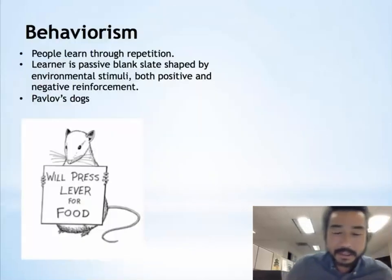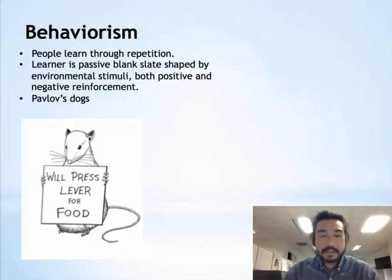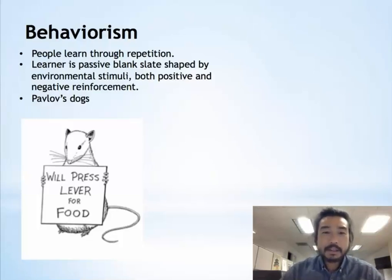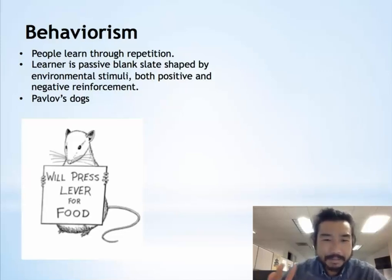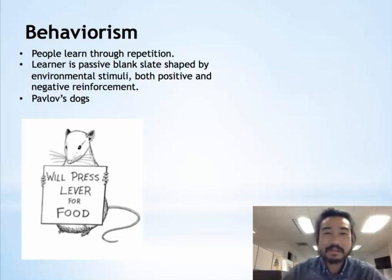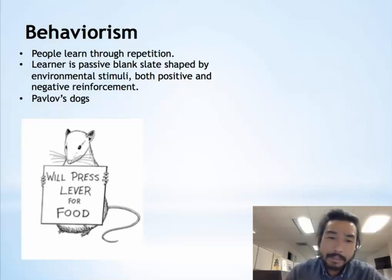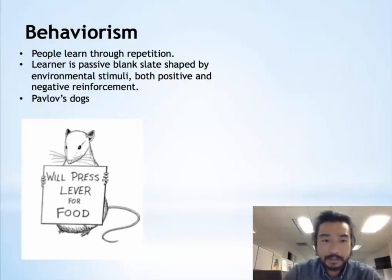We're going to start with behaviorism. This is one of the oldest ones. It's really about the human being or the learner being a blank slate, and they are shaped by stimuli both positive and negative. It's kind of like the rat who wants to get the piece of cheese and it pulls the lever — we have a little picture of that rat right there. And people learning through repetition is also one of the hallmarks of behaviorism.